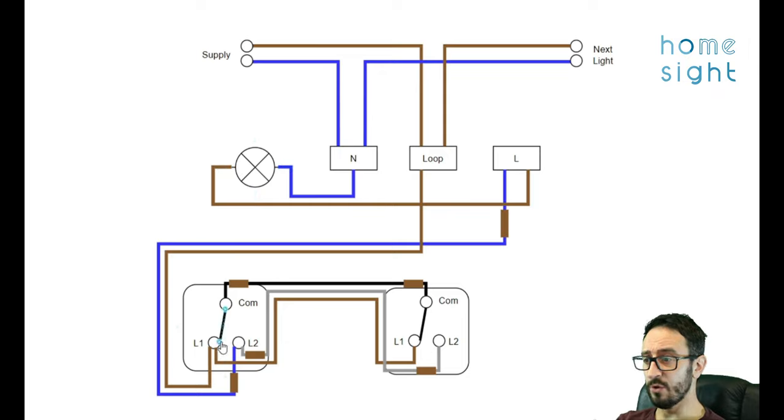So with them both in the L1 switched state means there is no electricity getting to our bulb. So if we were to move this one over to our L2 now the electricity coming down the brown wire is not connected to our common but it is going to go down this other brown wire to our other switch onto our L1 terminal up to our common across our black wire down from the common to L2 ultimately onto this blue wire which is going to complete the circuit through our switch live terminal here and onto the brown.